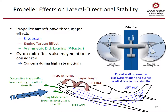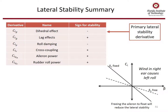Let's examine propeller effects on lateral-directional stability. Propeller aircraft have three major effects: slipstream, engine torque effect, and asymmetric disk loading or P-factor. P-factor tends to generate a left yaw. Engine torque tends to generate a left roll. And the slipstream also tends to generate a left yaw.